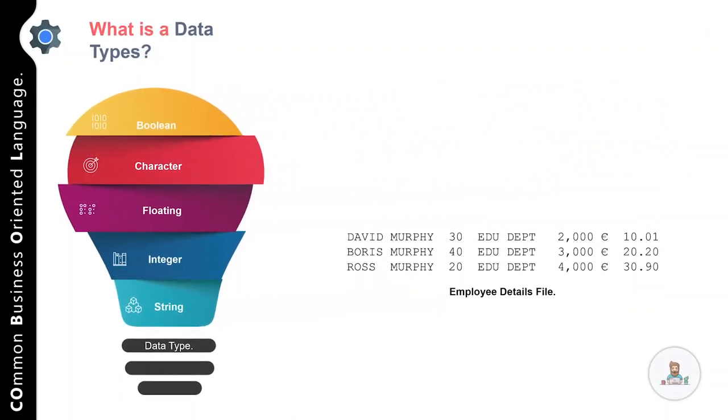For example, if you notice the employee detail file, which is a sequential file, it is actually having different categories of data. The first column is an employee name, and it is actually a string of characters. After that you have employee age, which is actually an integer. Thereafter you have department name, which is again a string of characters. After that you have employee salary, which is again an integer value.